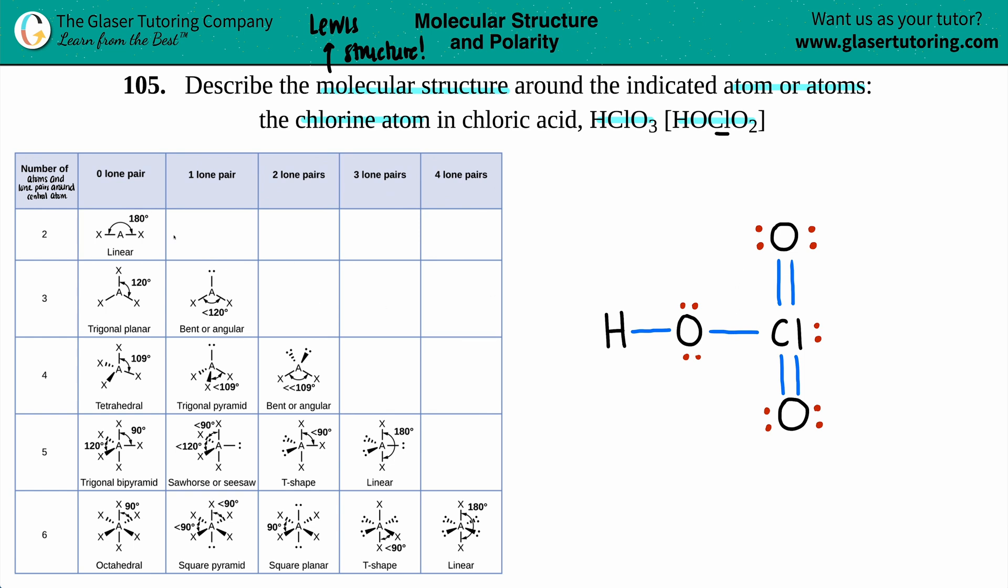So now here comes the chart. They want us to find out what the molecular geometry for chlorine is. We just have to take into consideration the number of total atoms and the lone pairs. For zoning in on the chlorine, we just have to see what's going on around the chlorine. So in this case, I have one oxygen that's bound to the chlorine, another oxygen that's bound to the chlorine, and another oxygen.